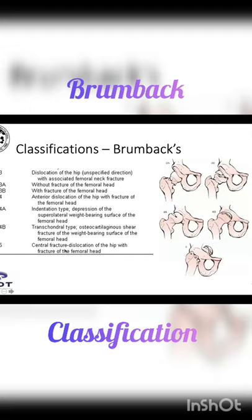In the Brombox classification, type 3 is the dislocation of the hip in an unspecified direction with associated femoral neck fracture. In 3A, we don't have a femoral head fracture. In 3B, we have a fracture of the femoral head.